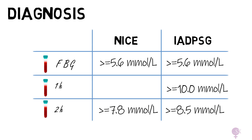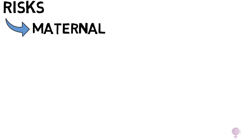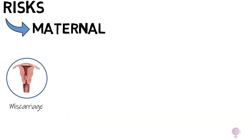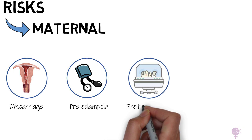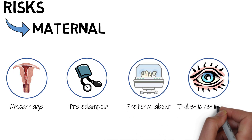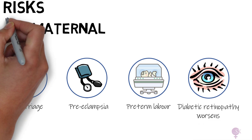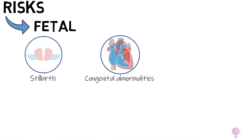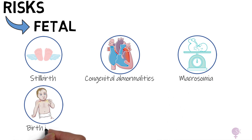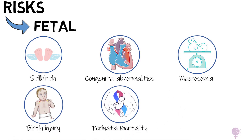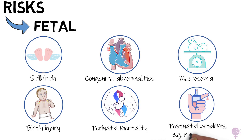Why do we make all of this fuss about checking and diagnosing GDM? What are the risks of diabetes in pregnancy? The risks can be divided into those affecting the mother and the baby. Maternal risks include a higher risk of miscarriage, pre-eclampsia, pre-term labor, and in previously diabetic patients, diabetic retinopathy can worsen. Fetal risks include stillbirth, congenital abnormalities — most commonly cardiac — macrosomia, birth injury, perinatal mortality, and postnatal problems such as hypoglycemia.